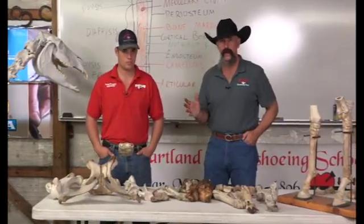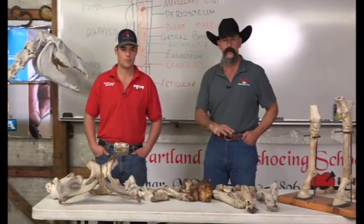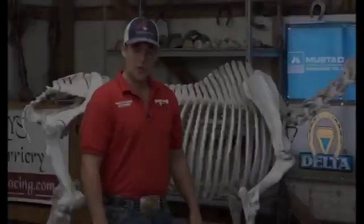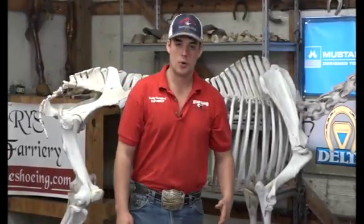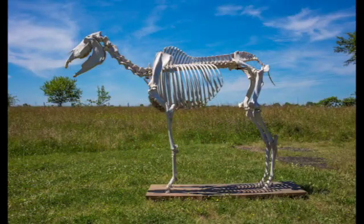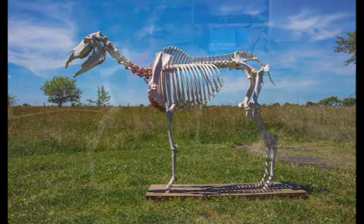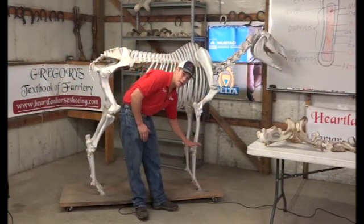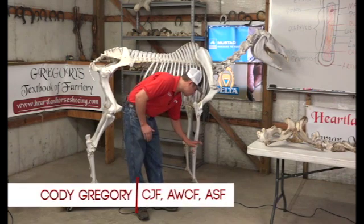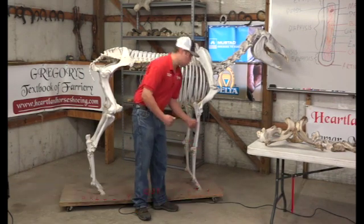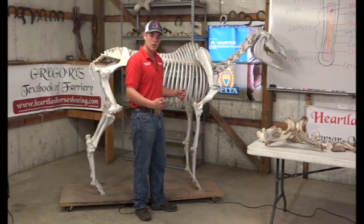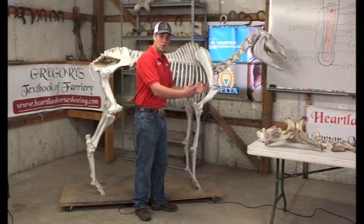Cody's going to start out with some definitions of anatomy. Anatomy is like another language, so knowing the terms and how they're defined is very important. What we're going to be talking about most as horseshoers is the appendicular skeleton, which consists of the limb from the scapula down and the pelvis down. The leg is everything from the knee or hock down.